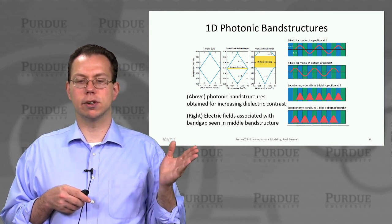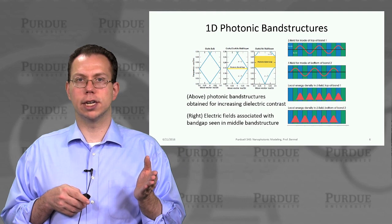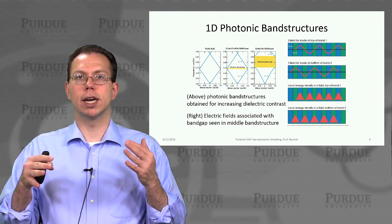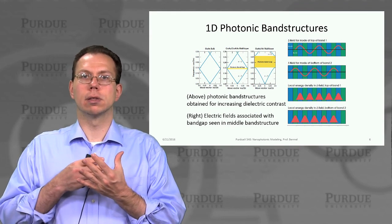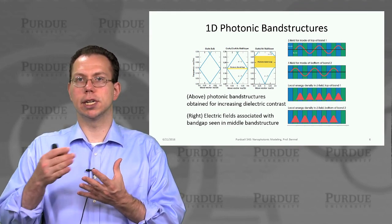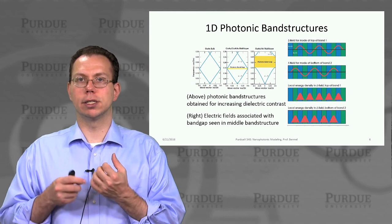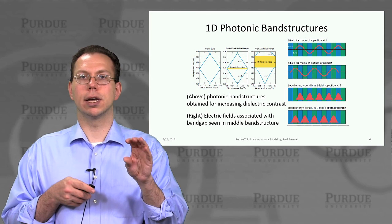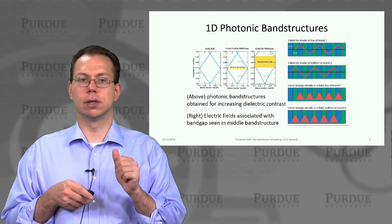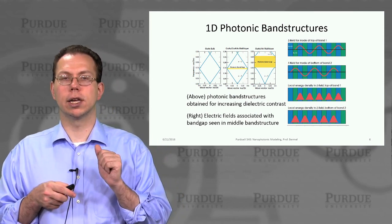So that illustrates the general trend and the separation between modes and why there's this physical gap. The localization of the modes into different regions gives rise to that energy difference. That's why it's a so-called forbidden gap, because there's no way to hedge the difference between those two.